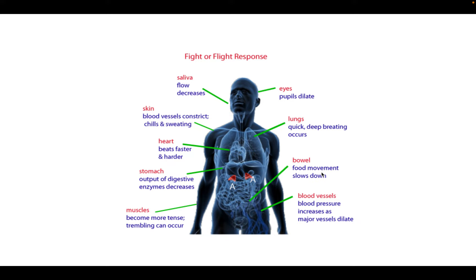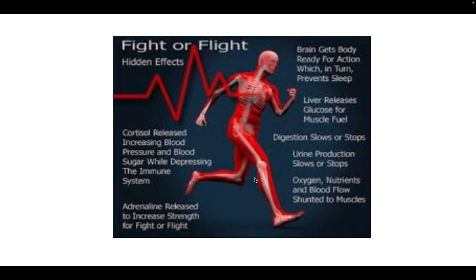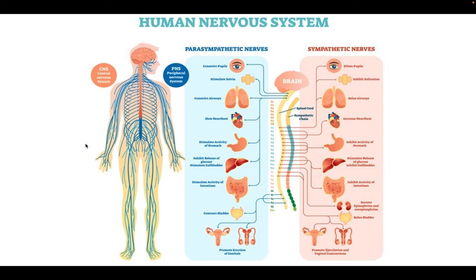Blood pressure increases and major vessels dilate to send blood to all the important things. In the bowels, food movement slows down. Urine production also slows or stops. Glucose is released for instant energy — that's the quick fuel. Adrenaline is released to increase strength, giving you that additional power hormone. The immune system is also depressed because we don't need to be fighting off things for later — we just need to be surviving right now. That's our fight or flight: amped up, ready to go, driven by the sympathetic nervous system.